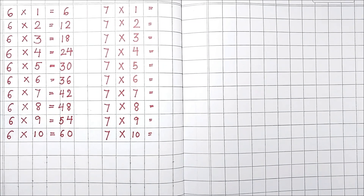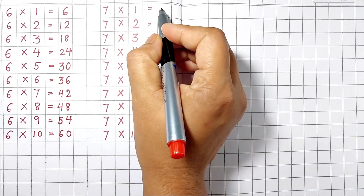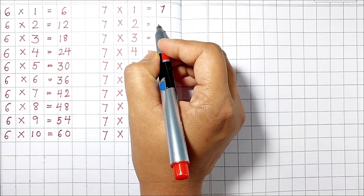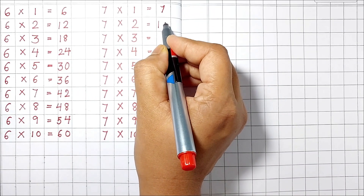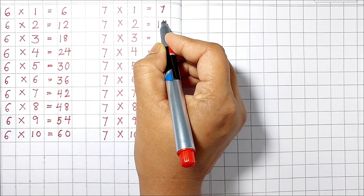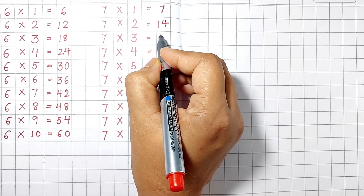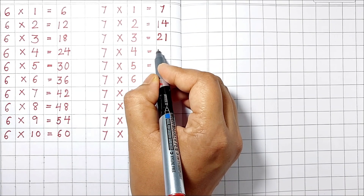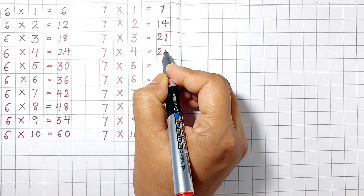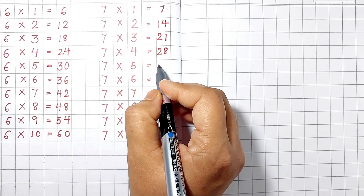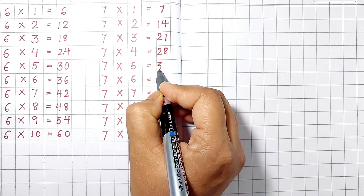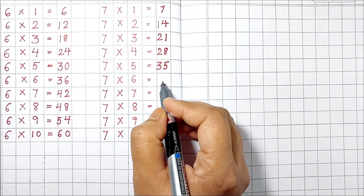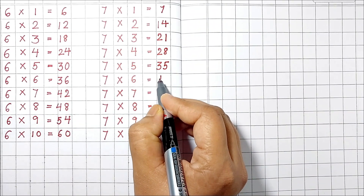Table of 7. 7 1's are 7. 7 2's are 14. 7 3's are 21. 7 4's are 28. 7 5's are 35.